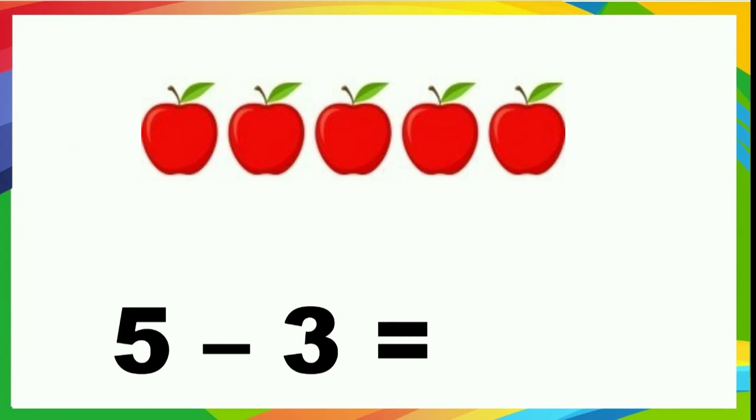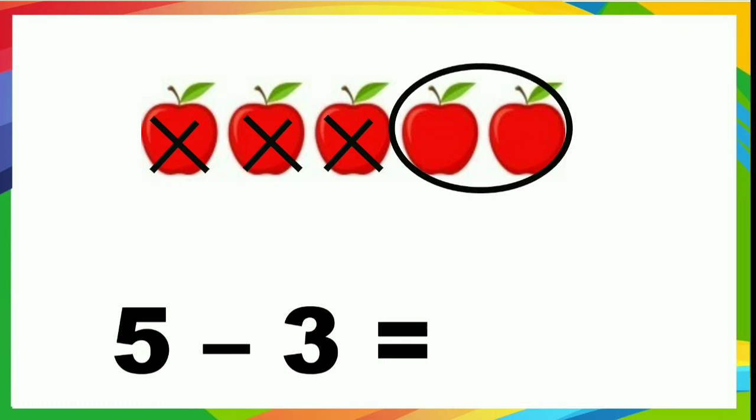5 minus 3. 5 apples are there. Yes. You need to take away how many? 3. Count. 1, 2, 3. How many left? 5. 1, 2. How many left? 2. 5 minus 3 is equal to 2.